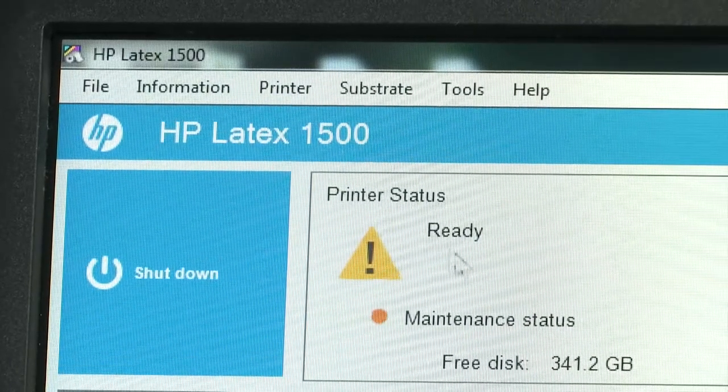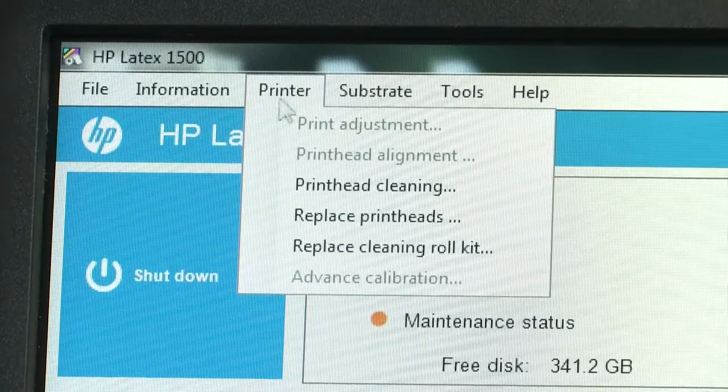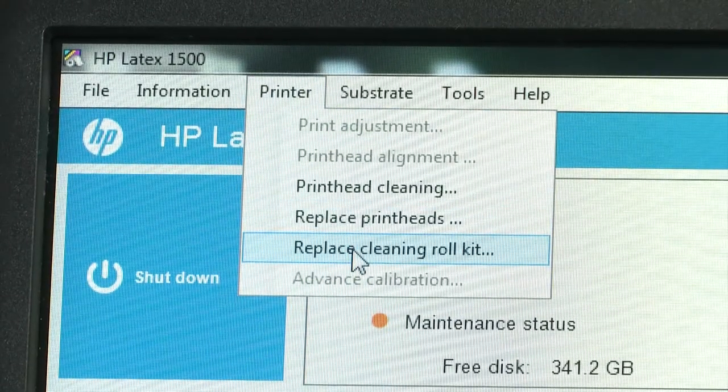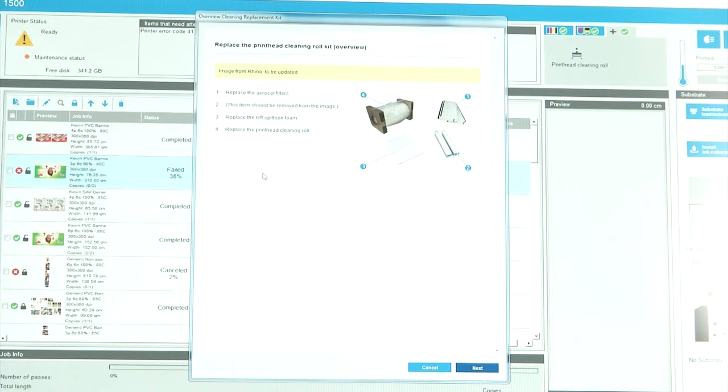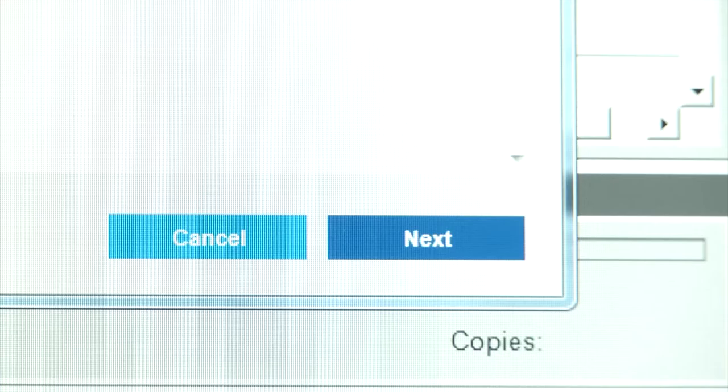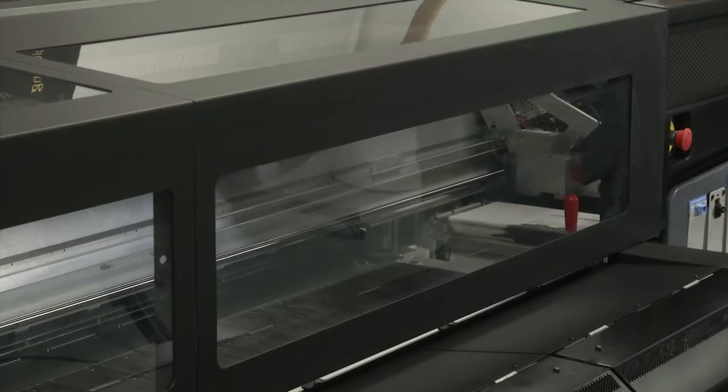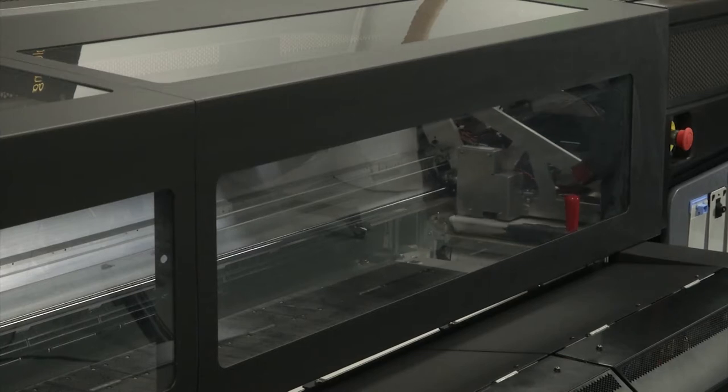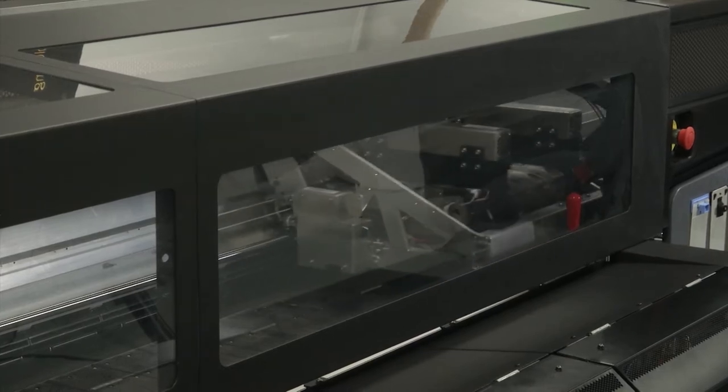Navigate to the internal print server or IPS, click printer and select replace cleaning roll kit from the drop down menu. Click next to begin the replacement process. The carriage moves to the service position.